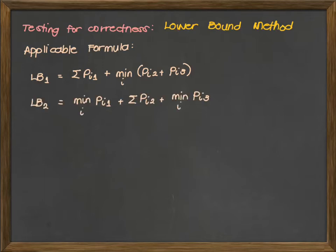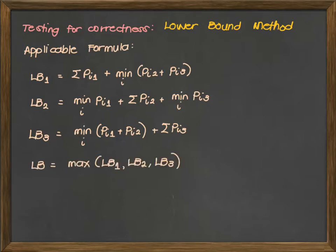For the second lower bound value for machine 2, we use the minimum processing time in machine 1 plus the summation of all processing times in machine 2 then plus the minimum processing time in machine 3. Finally, for the third lower bound value, we get the minimum sum between processing time of machine 1 and 2 plus the summation of all the processing time of machine 3. The lower bound value will be the maximum between LB 1, 2, and 3.